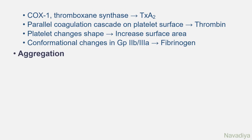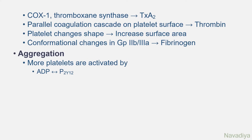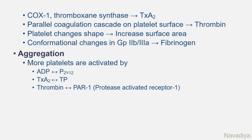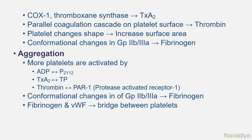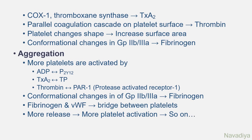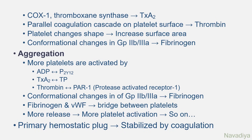The next step is platelet aggregation. More platelets are activated by ADP binding P2Y12, thromboxane A2 binding its receptor, and thrombin binding protease-activated receptor 1. This activation causes conformational changes in glycoprotein 2b3a, which binds fibrinogen. Fibrinogen and von Willebrand factor work as bridges between platelets. These activated platelets also release more ADP and thromboxane A2 to activate even more platelets, forming the primary platelet plug, which is further stabilized by coagulation.